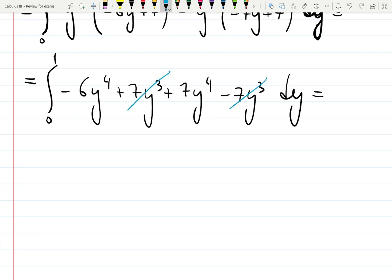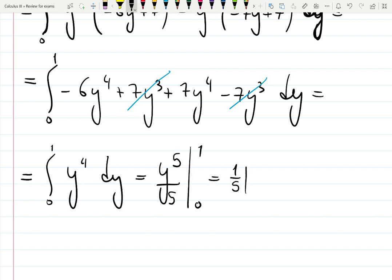And then it all collapses into y⁴ dy. Y⁴ gives you y⁵/5 from 0 to 1, which is just 1/5 minus 0. So the answer is 1/5.